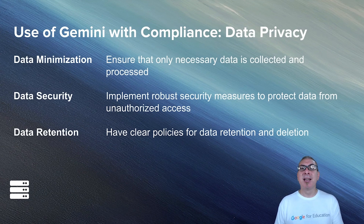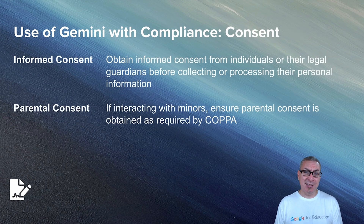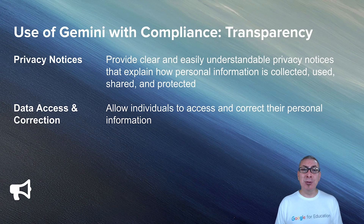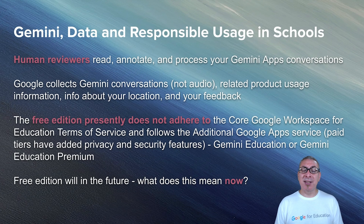Ways to be compliant would include minimizing the amount of data we collect and process, having robust and strong security measures in place, and being very clear with our policies about what data is collected and what data is kept or deleted. As required by law, we should be practicing informed consent and getting consent from parents and guardians when using their children's data. In terms of transparency, we must provide clear policies on how information will be collected, used, shared, and deleted, and we must allow individuals to have access to their information and even correct it.